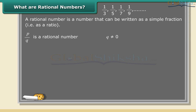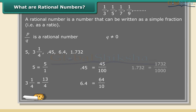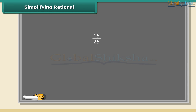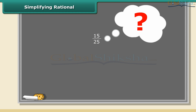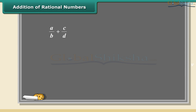Remember, q cannot be equal to 0. Can you tell which of these numbers are rational? Yes, all of them are rational. Sometimes a rational number can be simplified further. Here we can divide the numerator and denominator by 5 to get 3 by 5 — this is the simplest form. We can simplify the fraction by dividing the numerator and denominator by a common factor.